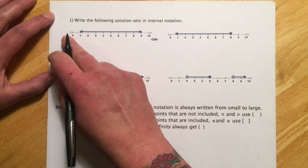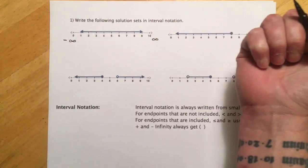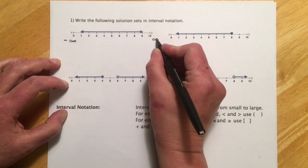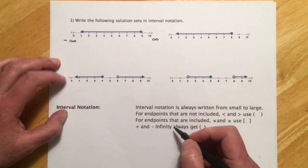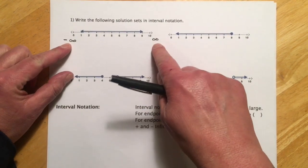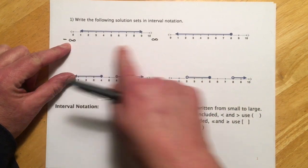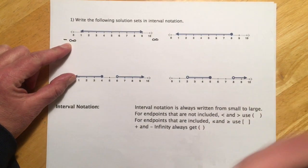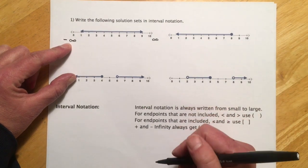So parentheses go with open dots and no equals, and we'll use brackets for closed dots and things with equals. Infinity is kind of what the number line goes to — that little sideways 8 symbol. Out here is negative infinity, this one is positive infinity, and those cannot be included because we can always go one more step beyond infinity.